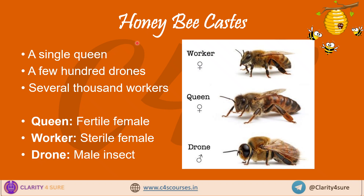Starting with, we will discuss the major honeybee castes. In every honeybee colony, there are three main types of bees or we can say castes. The first is the queen — the only fertile female and the mother of all bees in the colony. Second is the drones — the male bees whose main job is to mate with the queen bee. And third is the worker bee — the sterile females who do all the work to keep the colony running.